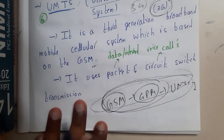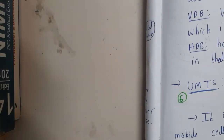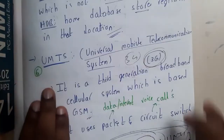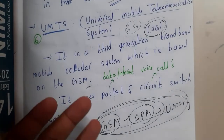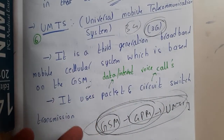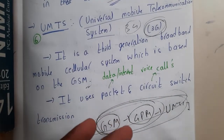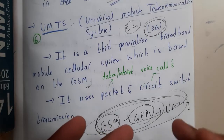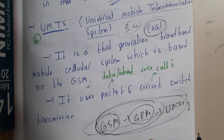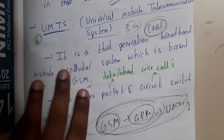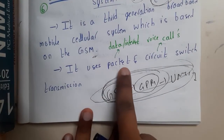UMTS is also emerging from GSM, and the next topic IMT2000 will also emerge from GSM. You can say these are upgradations in terms of data bandwidth rate or additional features like sending data, internet connection, and similar things.